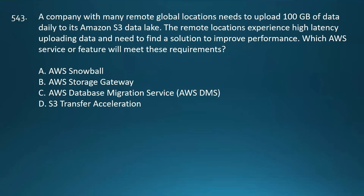Amazon S3 Transfer Acceleration is designed to speed up uploads and downloads to Amazon S3 over long distances and high-latency networks by routing traffic through the AWS Global Edge Network. AWS Snowball is best for offline bulk data transfer and is not practical for daily 100 GB uploads. AWS Storage Gateway is used for hybrid cloud storage solutions, and AWS Database Migration Service is used for database migrations.